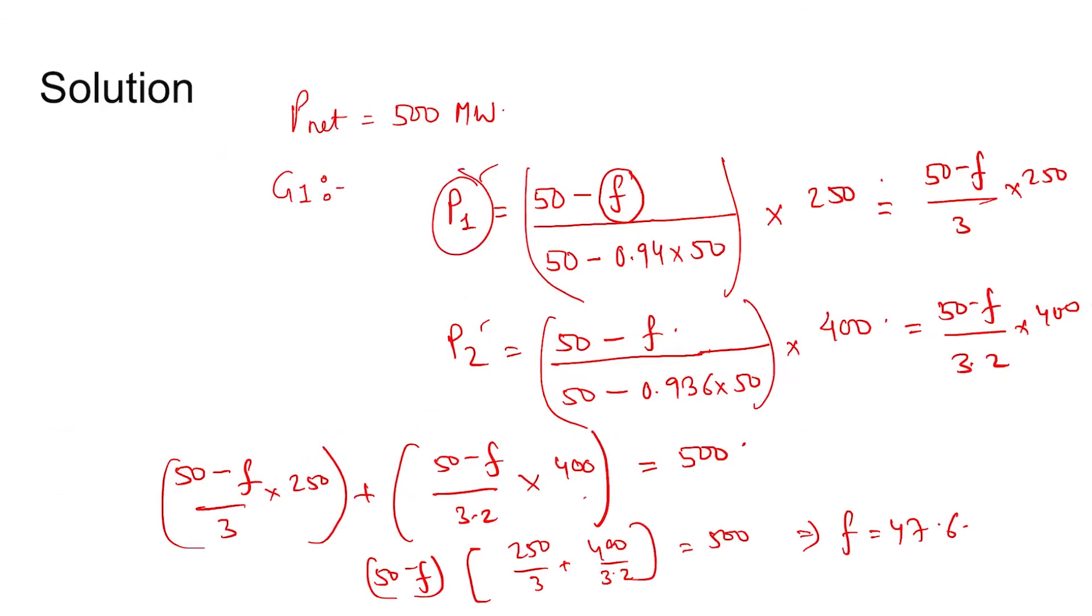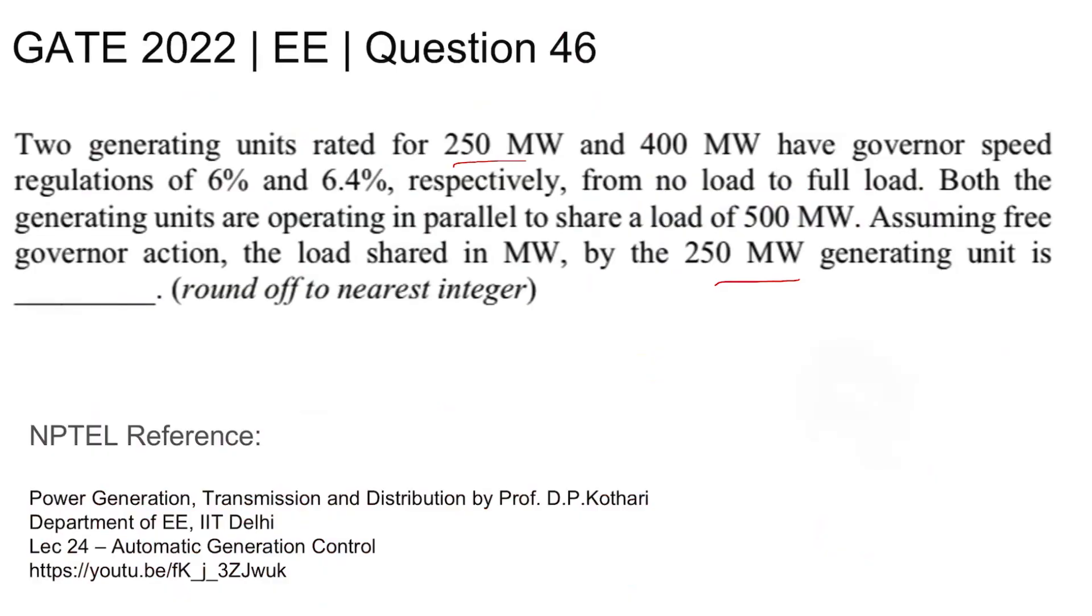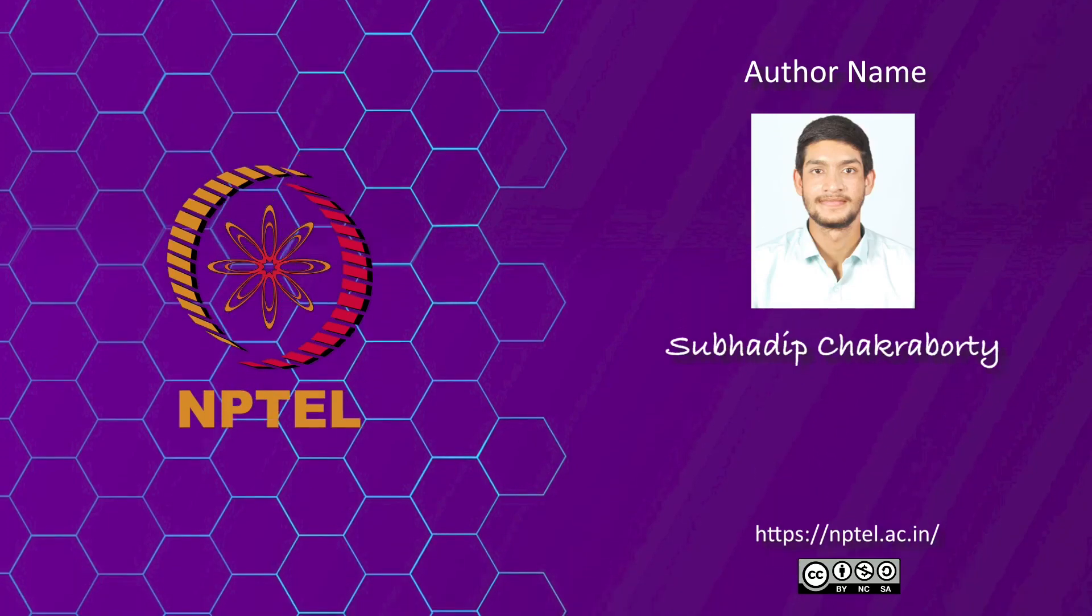So 250 megawatt, that is first generator generation is being asked, so P1 equal to 50 minus f which is 2.4 divided by 3 into 250 which is 200 megawatts. So this is the answer.